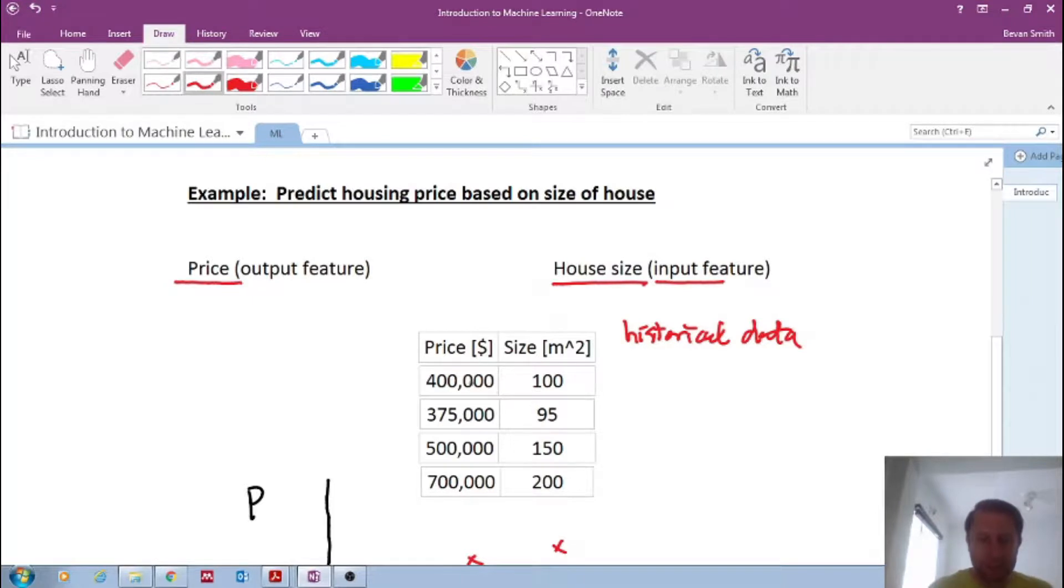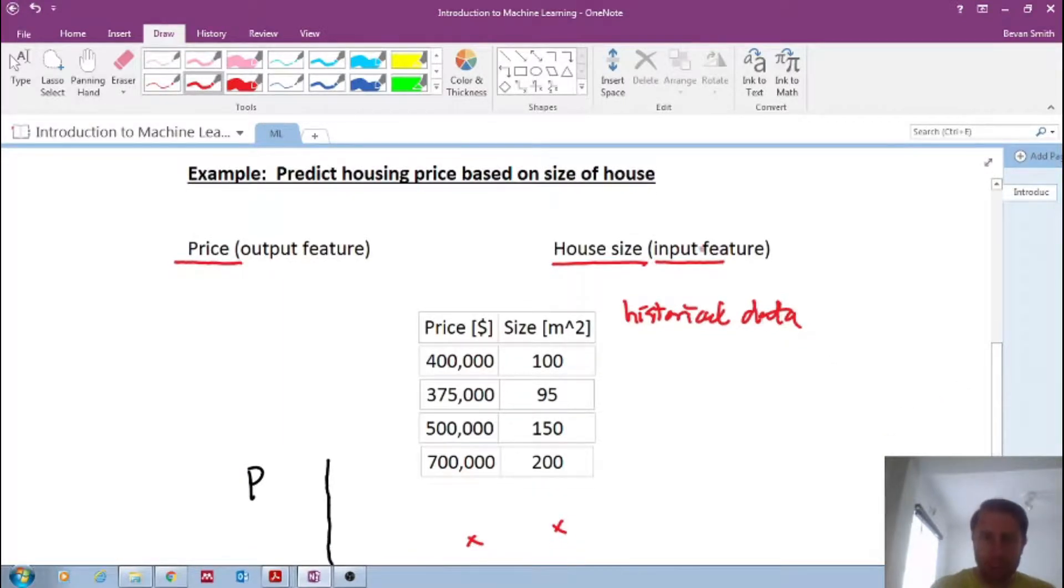And so we would like to find a relationship, a trend, a model in the data. And with this specific one, we would like to find a relationship between the input feature and the output feature. So we want essentially, we want price as a function of house size.